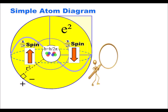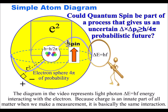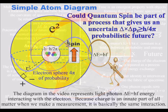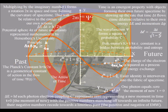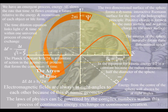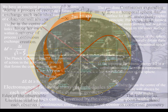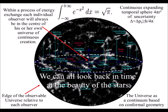When you look at any object, the light waves entering your eyes create photon energy in the here and now, occurring at this exact moment in time, with an uncertain future unfolding moment by moment, photon by photon. Each observer is in the center of their own reference frame, experiencing the moment of now, able to look back in time in every direction at the beauty of the stars.